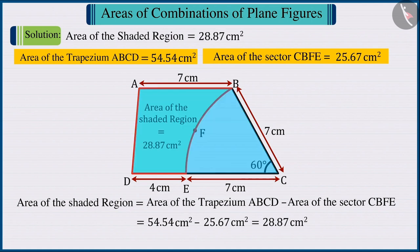So, we can say that the area of the shaded region in the trapezium ABCD is 28.87 cm².